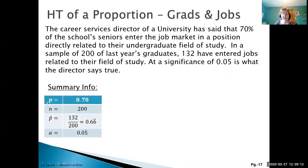Let's pick out our summary information. Our population proportion is currently 70% because the career services director said that 70% entered the job market in a position directly related to their undergrad. We had a sample of 200, so our sample size n equals 200. Here we have 132 entered jobs related to their field of study. Notice this time we don't have two percentages - we have a percentage for population proportion and a ratio for our sample proportion.